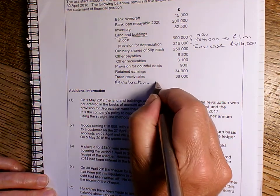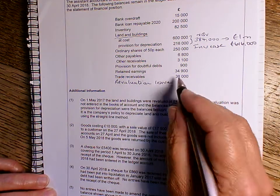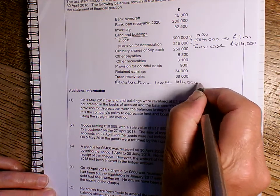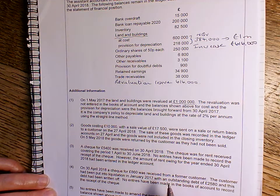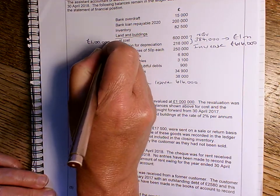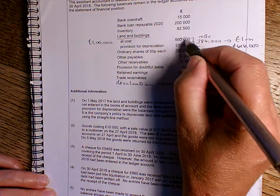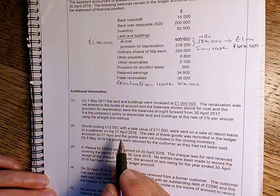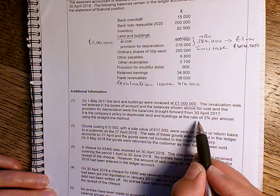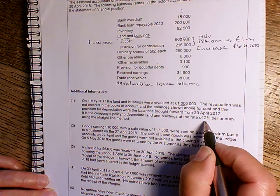Remember that's a type of capital reserve which goes on the statement of financial position in the equity section. So we're going to need £616,000 in there. We're then going to need to use our new cost, the £1 million, instead of the original cost of £600,000. And it tells us here that the company's policy is to depreciate land and buildings at the rate of 2%.